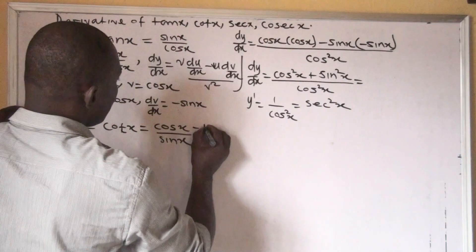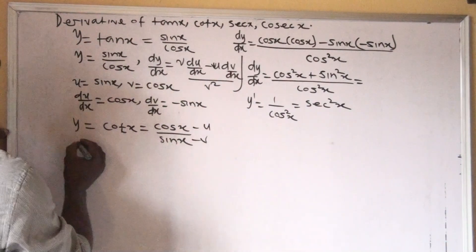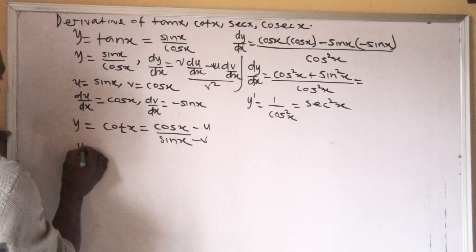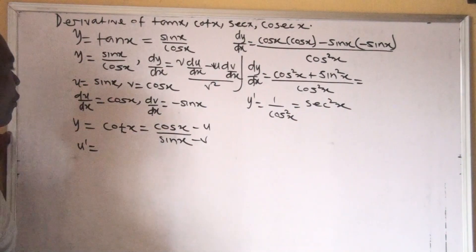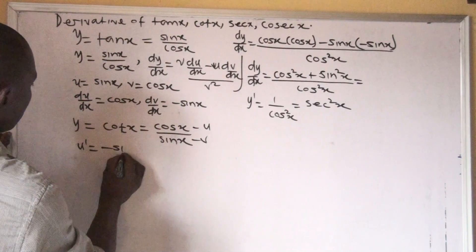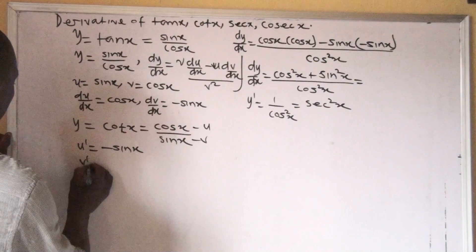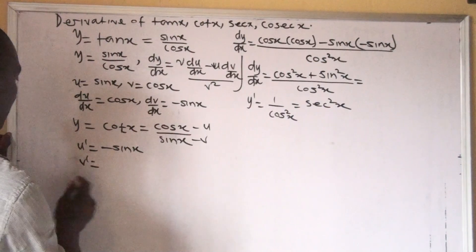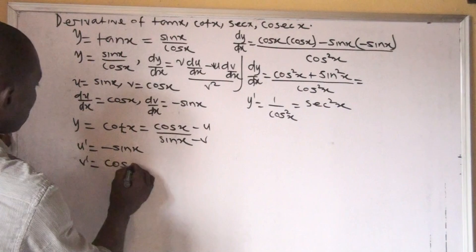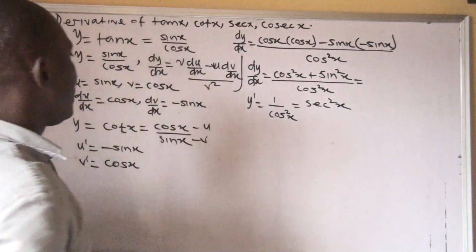Our u is cos x, and our v is sin x. So u prime — the derivative of u — is minus sin x. And our v prime — the derivative of v — gives us cos x. So we apply it in the same formula.